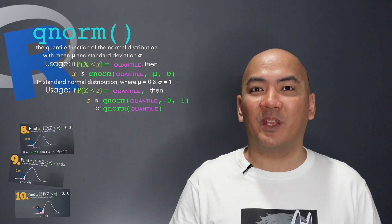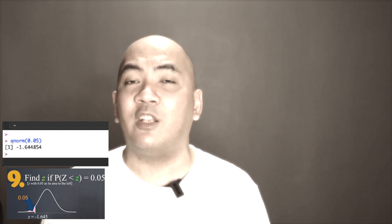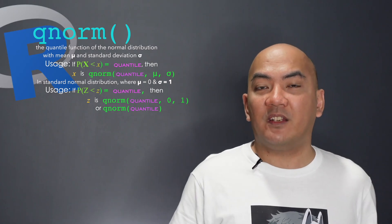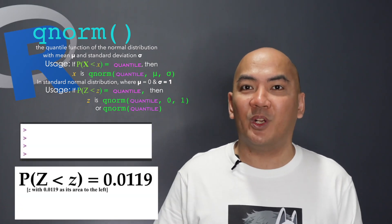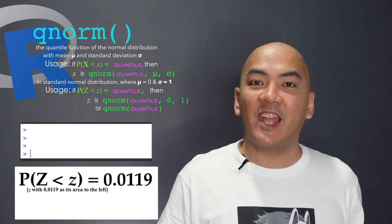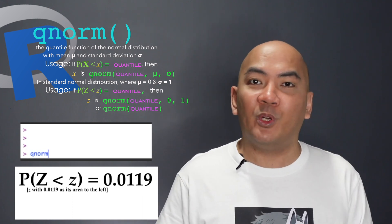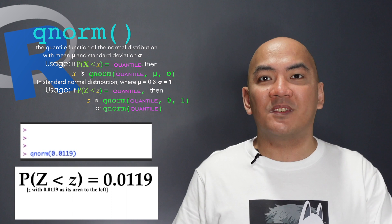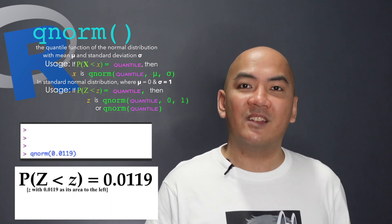This is the reason why Z equals -1.64 is better than -1.65: when rounded off to two decimal places, the exact value of Z that gives the cumulative probability of exactly 0.05 is actually -1.64 and not -1.65. So if you're asked to find the value of Z in which the cumulative probability is 0.0119, just type qnorm(0.0119), press Enter, and it will give you that value of Z.